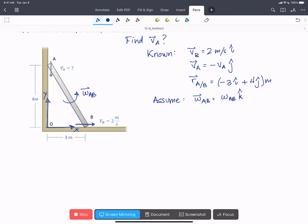So we can write down an equation for VA equals VB plus omega AB cross RA with respect to B.